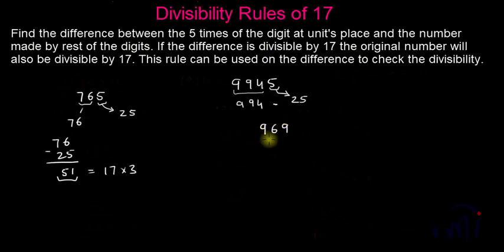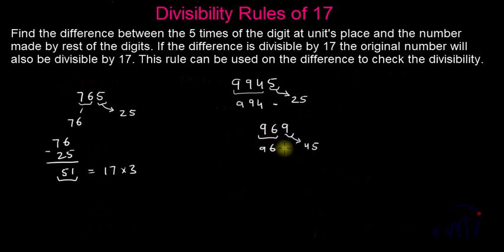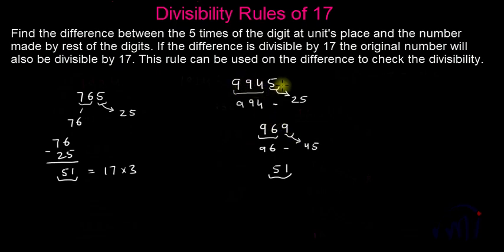You can either divide and check the divisibility by 17, or you can again apply the divisibility rule of 17. The digit at the units place of 969 is 9; nine fives are 45, and the number made by the rest of the digits is 96. Now 96 minus 45 is 51. Since 51 is divisible by 17, 969 is also divisible by 17, and therefore 9,945 is also divisible by 17.